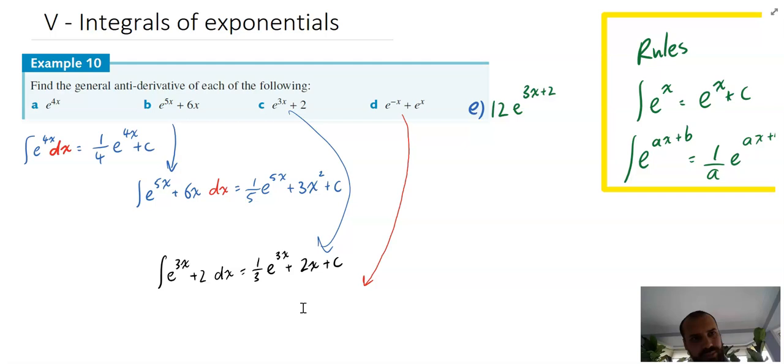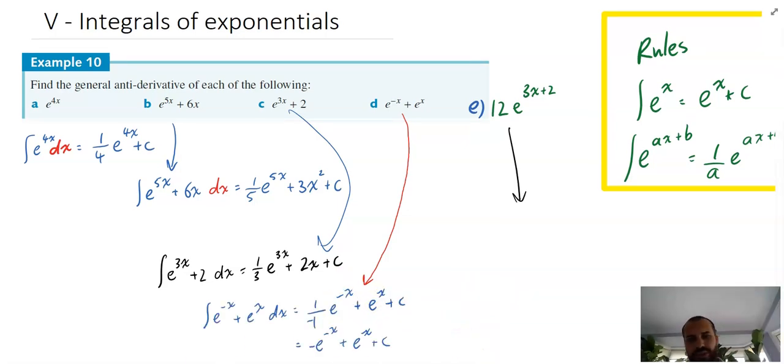Alright, so this next one messes with negatives and things like that. But we should be okay. The integral of e to the negative x plus e to the x with respect to x is equal to... Okay, that little negative is like negative 1. So this is going to be like 1 over negative 1, e to the negative x plus... And the integral of e to the x is just e to the x. So that's really easy. Plus c. And then 1 over negative 1 is just negative 1. So we can just write negative e to the negative x plus e to the x plus c. Now, if you don't believe me that that's right, why don't you just try deriving that?